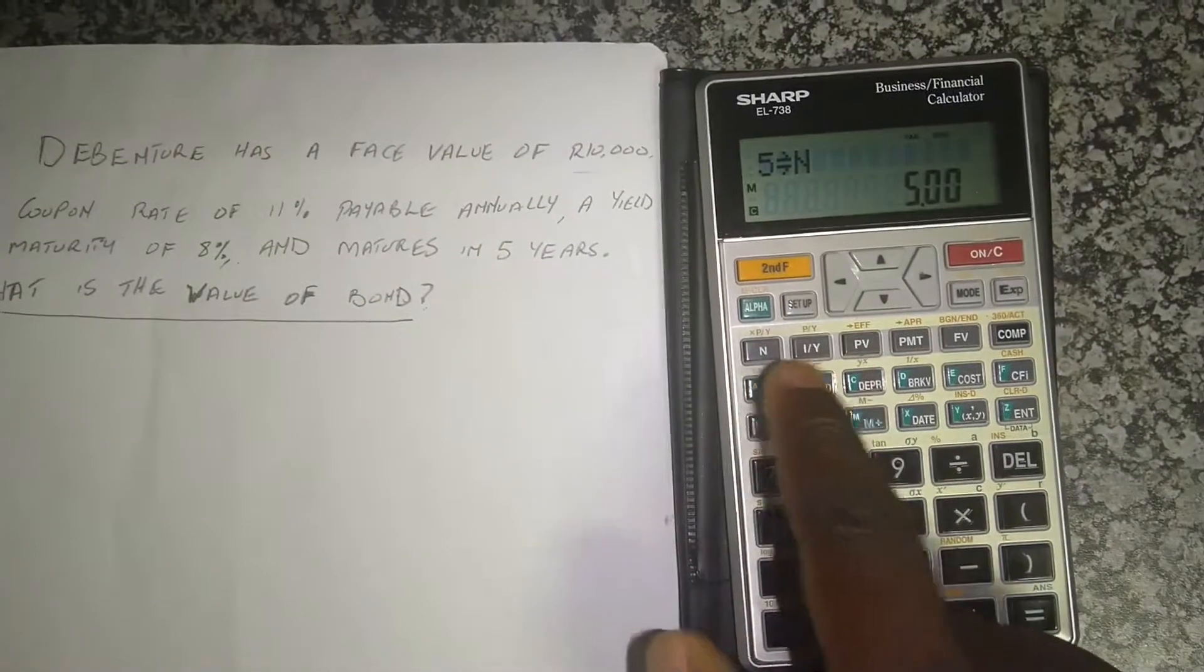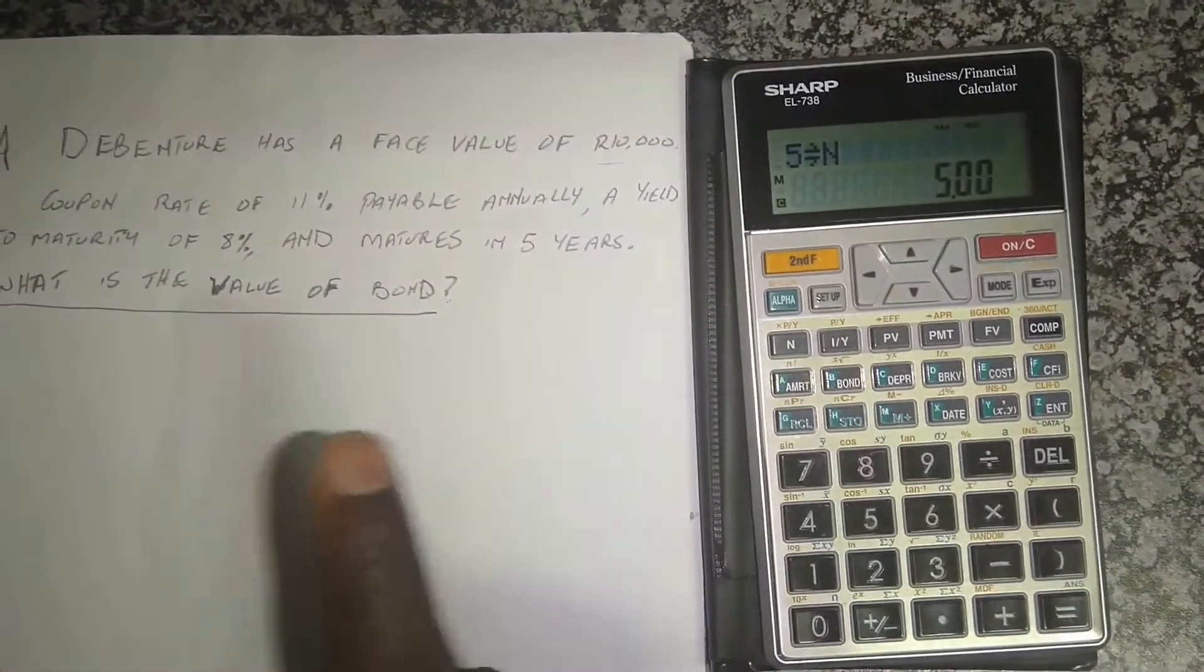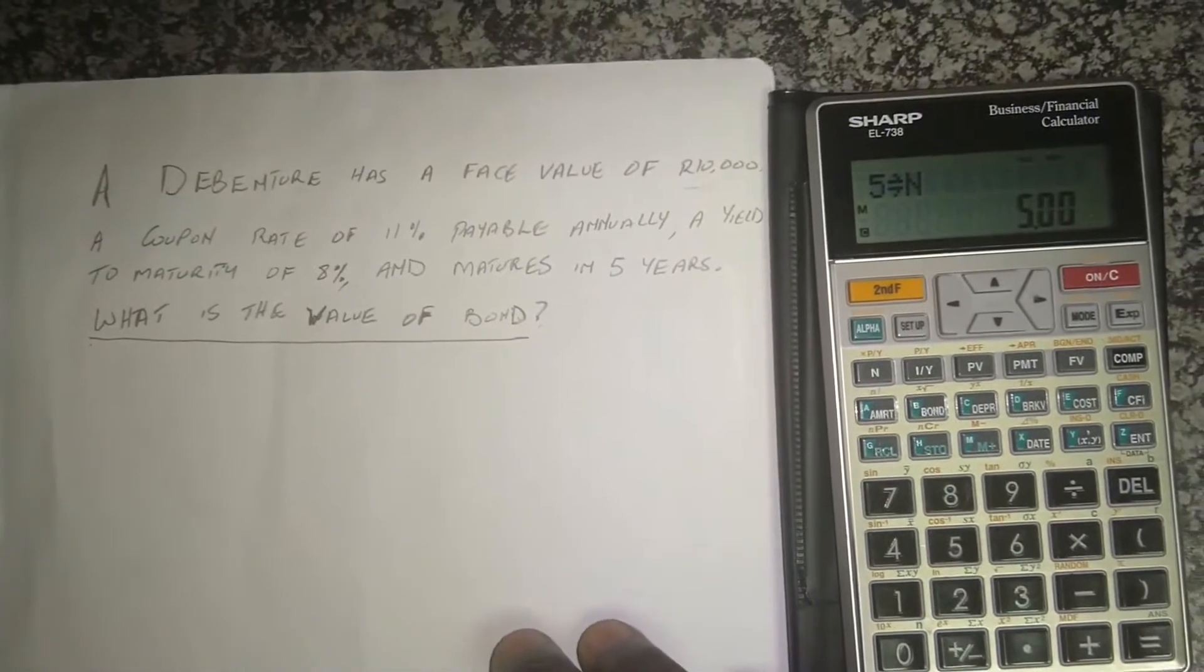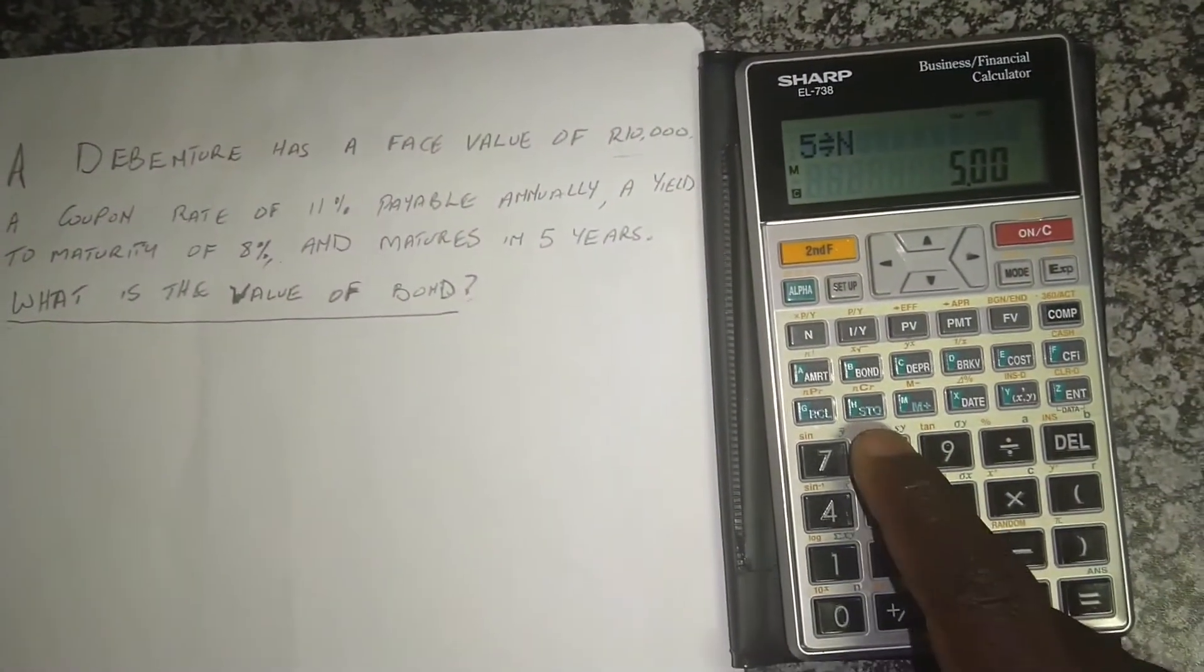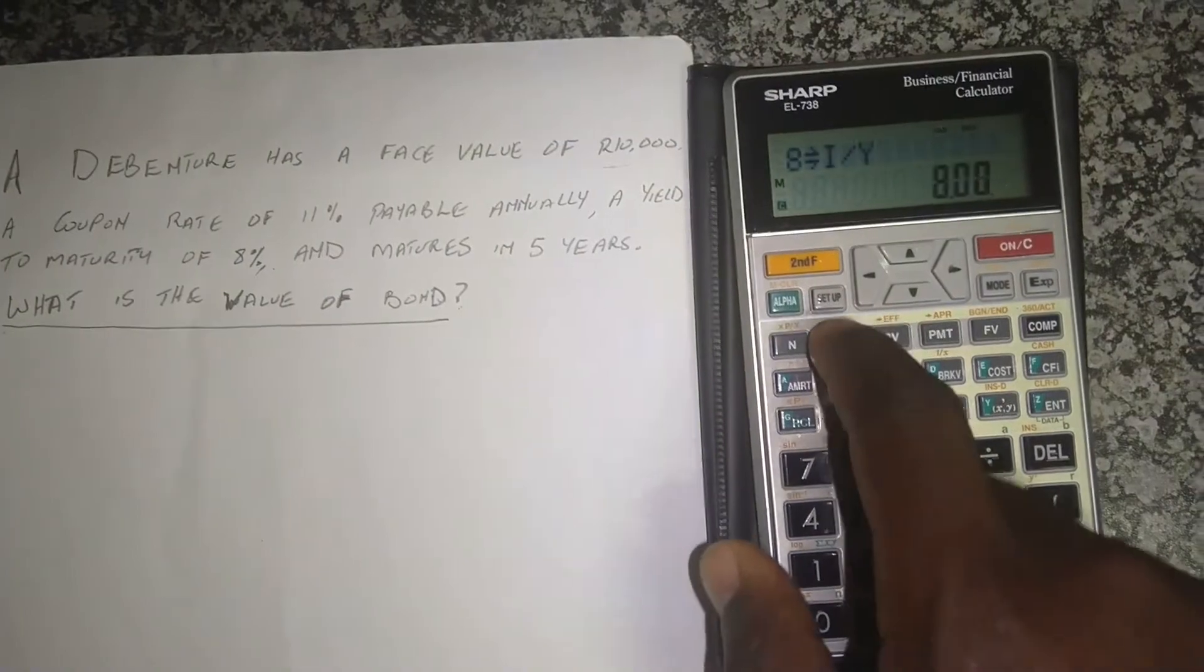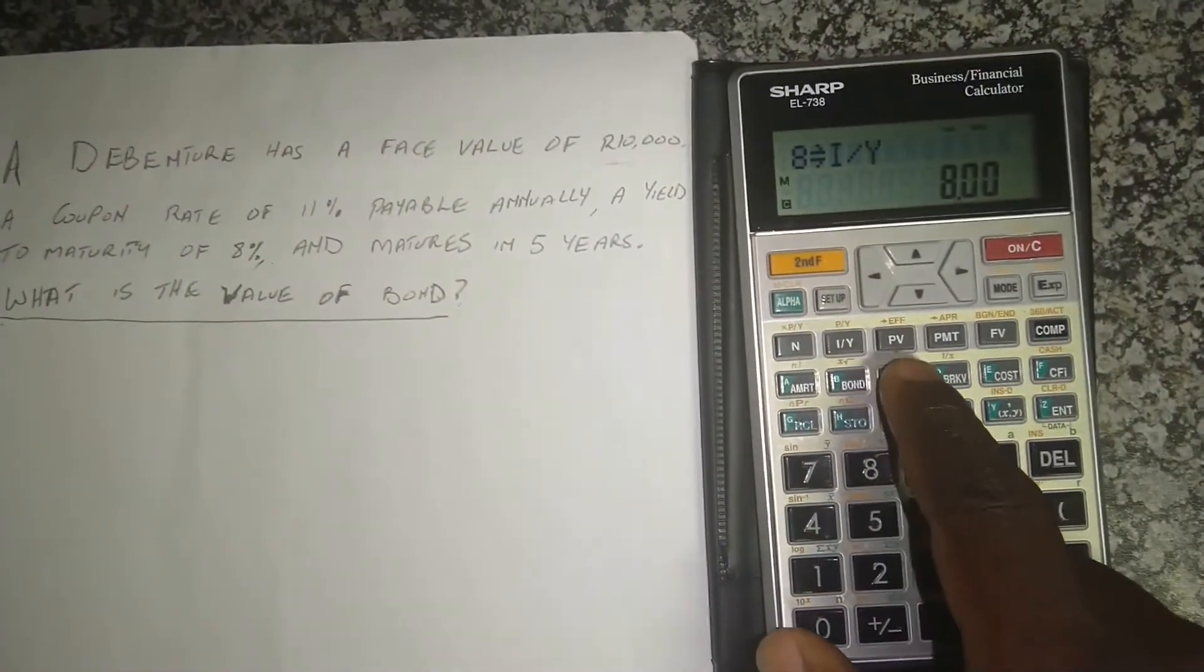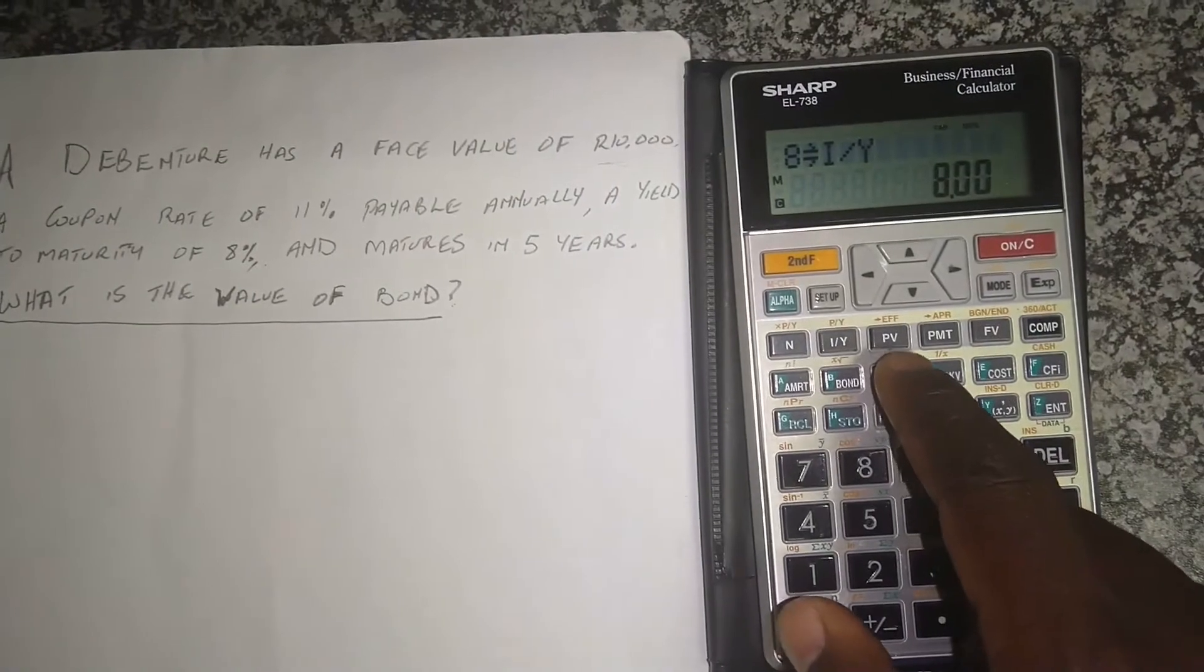And the second thing is the interest rate. What is the interest rate? Well we discount it at the yield to maturity which is eight percent. So press eight and then press I/Y. And then the next one is, well we are trying to compute present value so we skip the PV.